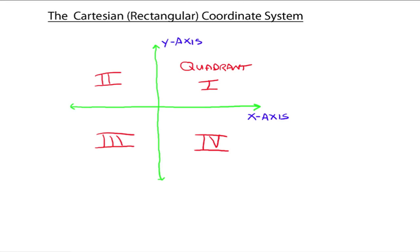These two lines meet at a spot right here — where we said a minute ago was the zero for each number line — and that spot is called the origin. The origin is where those two number lines meet.